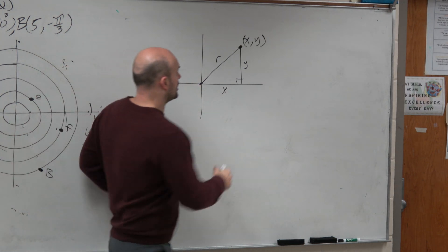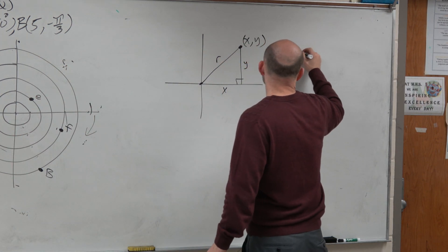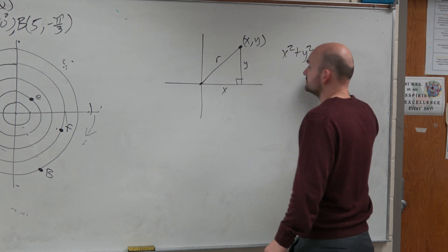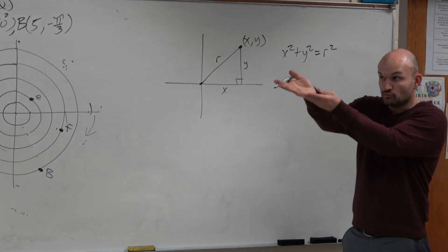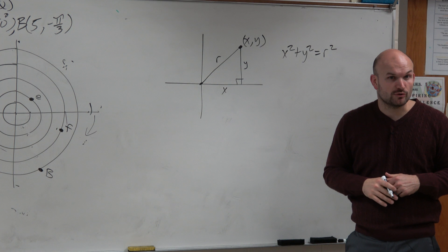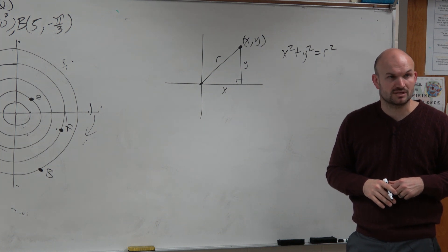So therefore, we could find the value of r by doing the Pythagorean theorem: x squared plus y squared equals r squared, which is our first equation up there for the class.